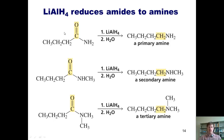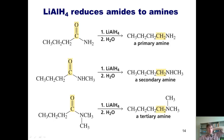If you begin with a primary amide and treat it with lithium aluminum hydride followed by a water quench, you go all the way down to a primary amine. An amide in which the nitrogen has a methyl on it gets reduced under the same conditions to a secondary amine. And if you take an amide in which the nitrogen has two methyls — or any other alkyl group — and treat it under the same conditions, it gets reduced all the way down to a tertiary amine.